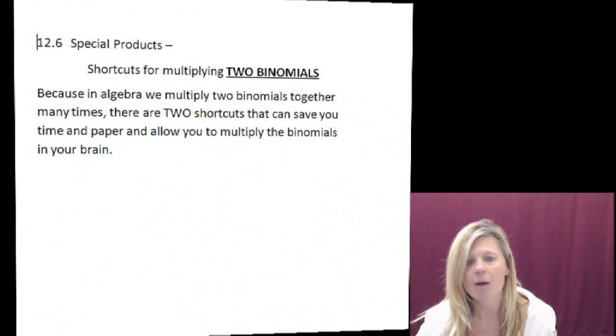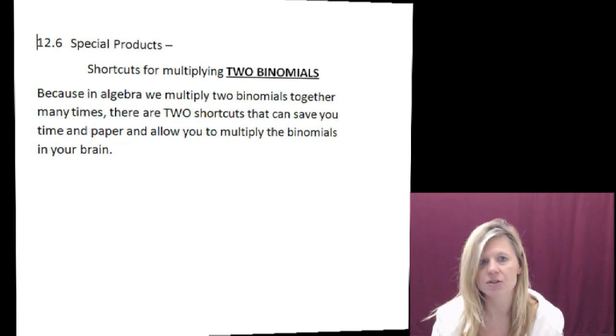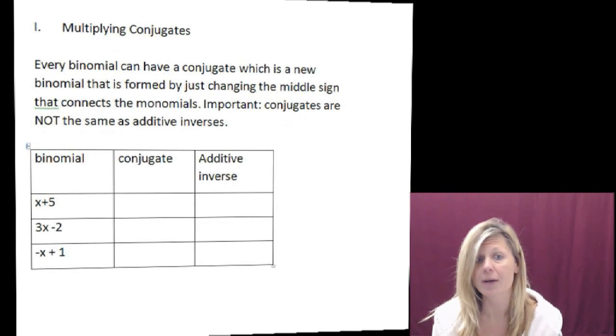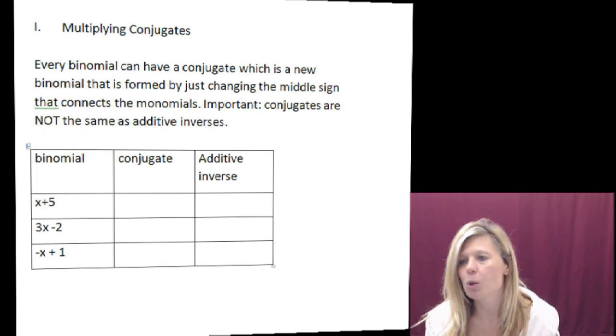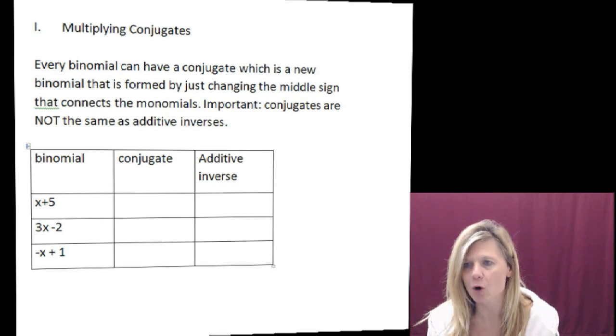They're for multiplying two binomial expressions. So if we go to our class notes and talk about our shortcuts, we're going to hear a new vocabulary word. And that word is going to be conjugate. The definition of conjugate is very simple. You only use this word with a binomial and all you're doing is changing the middle symbol of that binomial. So for example,